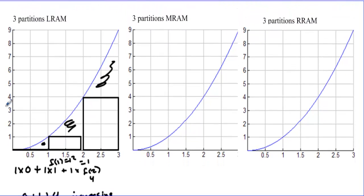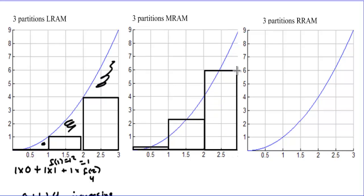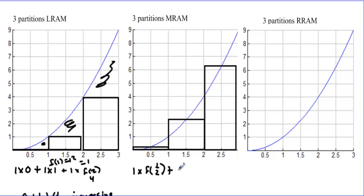Now let's look at MRAM — the Mid-Rectangular Approximation Method, or midpoint method. The first rectangle has a width of one, raised until the curve hits the middle of the rectangle. The second and third rectangles are similarly positioned. We still have three rectangles, each with width one. So we compute 1×f(½) + 1×f(3/2) + 1×f(5/2). The function is t², giving (½)² + (3/2)² + (5/2)² = ¼ + 9/4 + 25/4 = 35/4. The estimate is eight and three quarters.